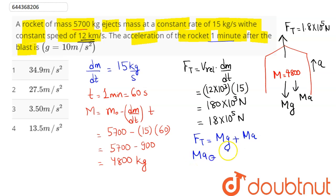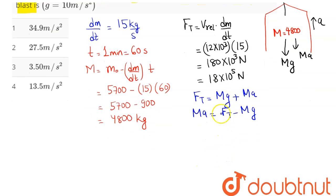This gives us the ma relation as Ft minus mg. We need to find the acceleration. The acceleration comes out to be A equal to Ft minus mg divided by m.